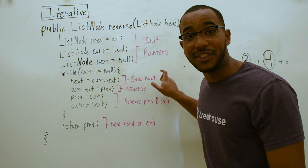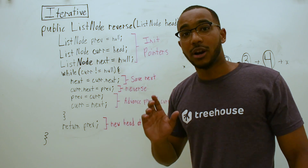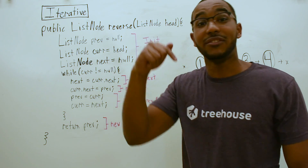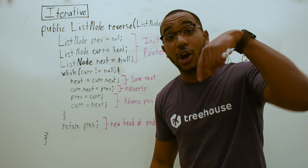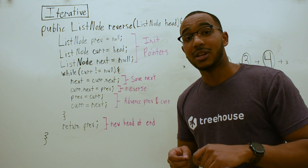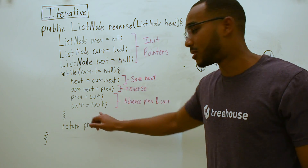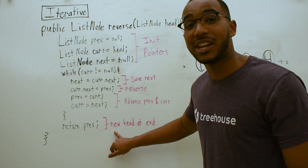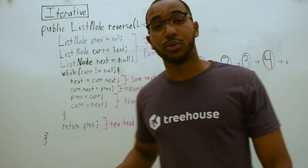We save the next pointer in our temp variable next — we stash that pointer — and then we reverse: we point the current node to its previous node. Then the previous node becomes the node we're sitting on, and the current node becomes the node we saved, which was next. At the end, our previous node will be pointing at the head of the new list. So let's walk through this on an example.